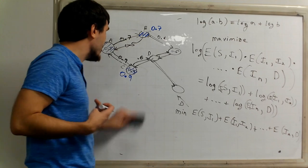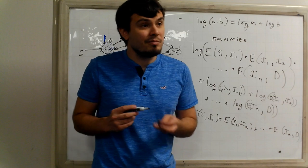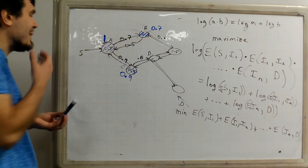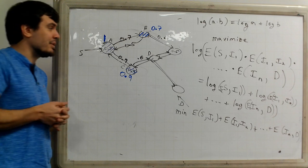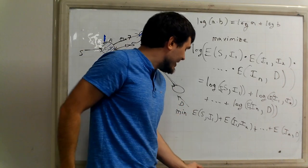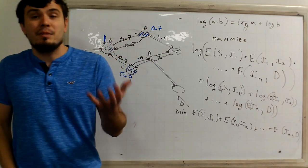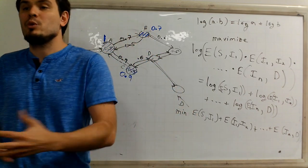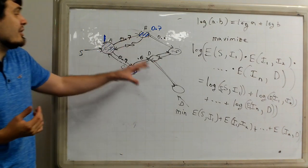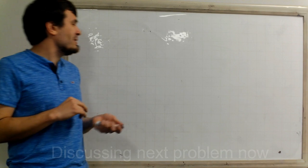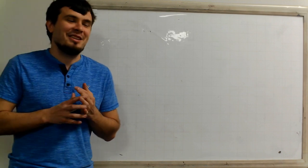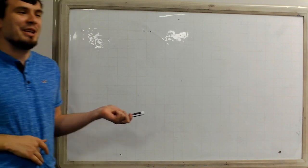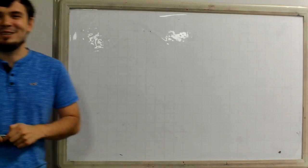So we basically pre-processed the graph in such a way that we can now just apply Dijkstra's. There are two paths to this problem: either the mathematical insight of transforming multiplication into addition via logarithms, or a deeper understanding of Dijkstra's argument to run it directly on the probability graph. This problem came from a coding contest where all the problems were Game of Thrones themed.